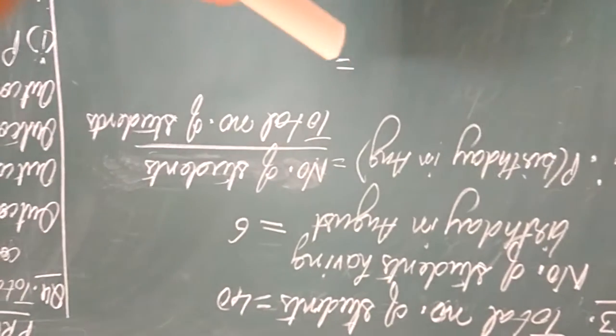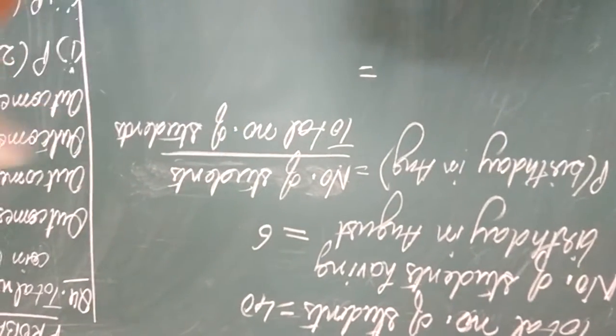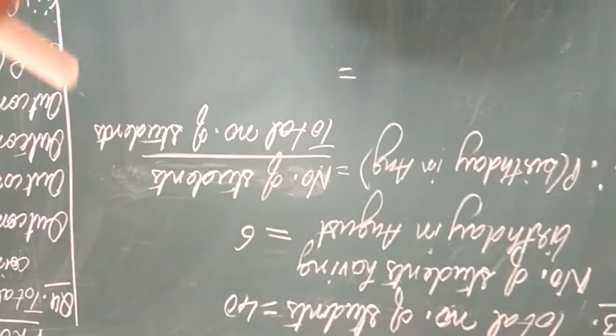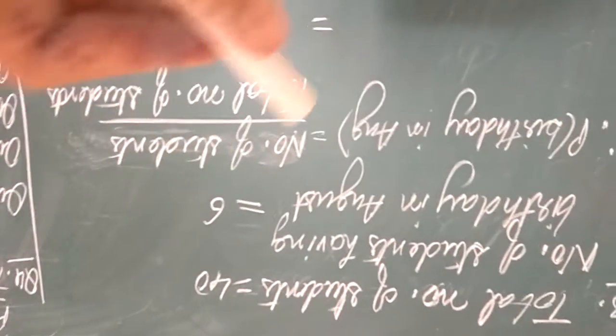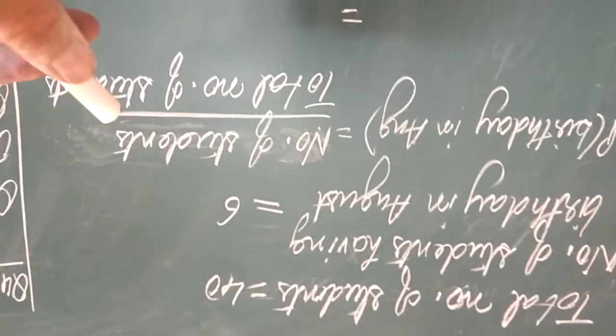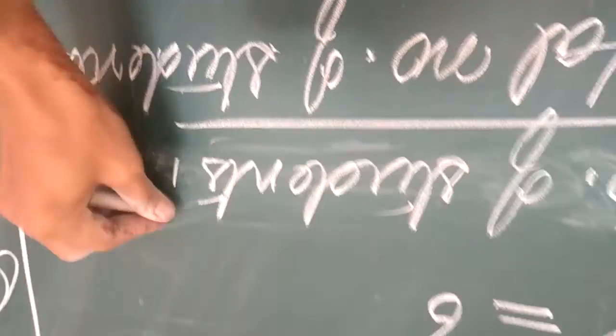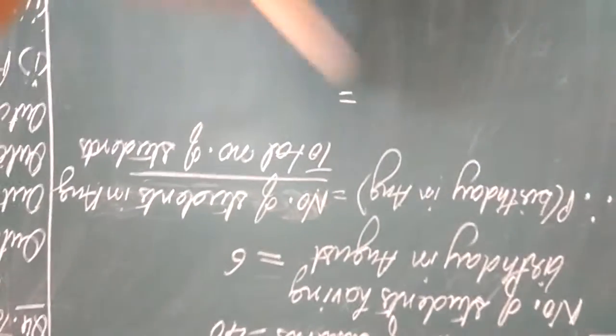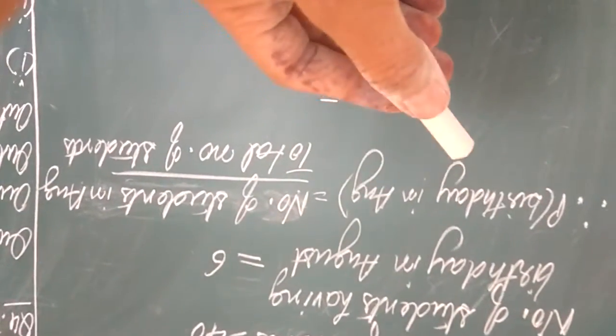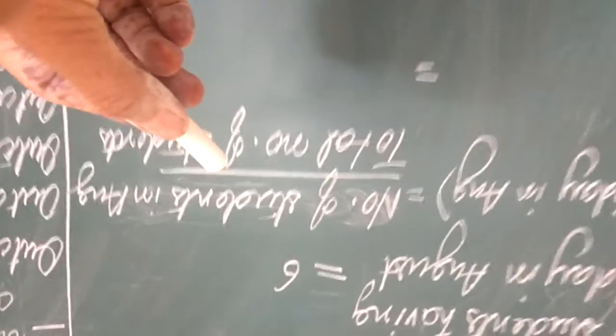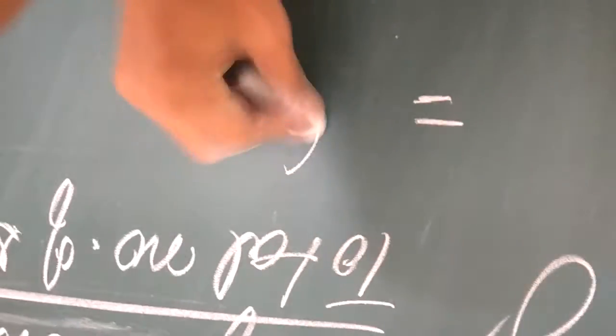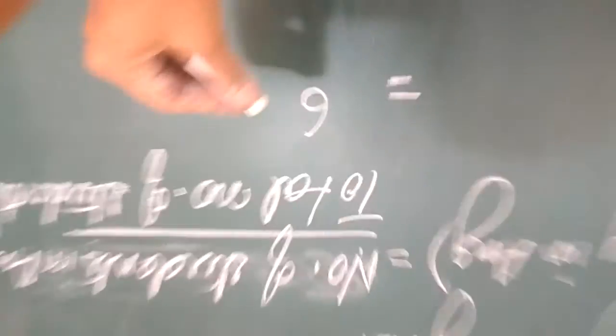Now as you know, the probability, the formula of probability is number of favorable outcomes divided by total number of outcomes. Now in this, number of favorable outcomes means the number of students having their birthday in the month of August divided by total number of students. So the probability of the birthday in August is equal to 6 students who are having birthday in the month of August divided by total that is 40.